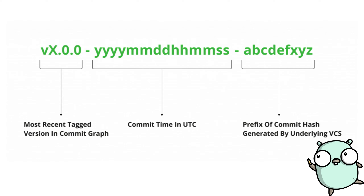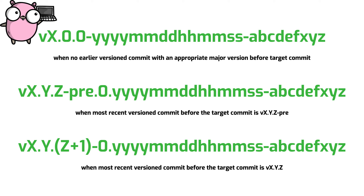A pseudo version has the following format: the most recently tagged version in the commit graph, followed by the commit time in UTC, and finally the prefix of the commit hash generated by the underlying version control. There are three acceptable forms of a pseudo version. The first is used when there is no earlier versioned commit with an appropriate major version before the target commit. The second, when the most recent versioned commit before the target commit is version x.y.z-pre.